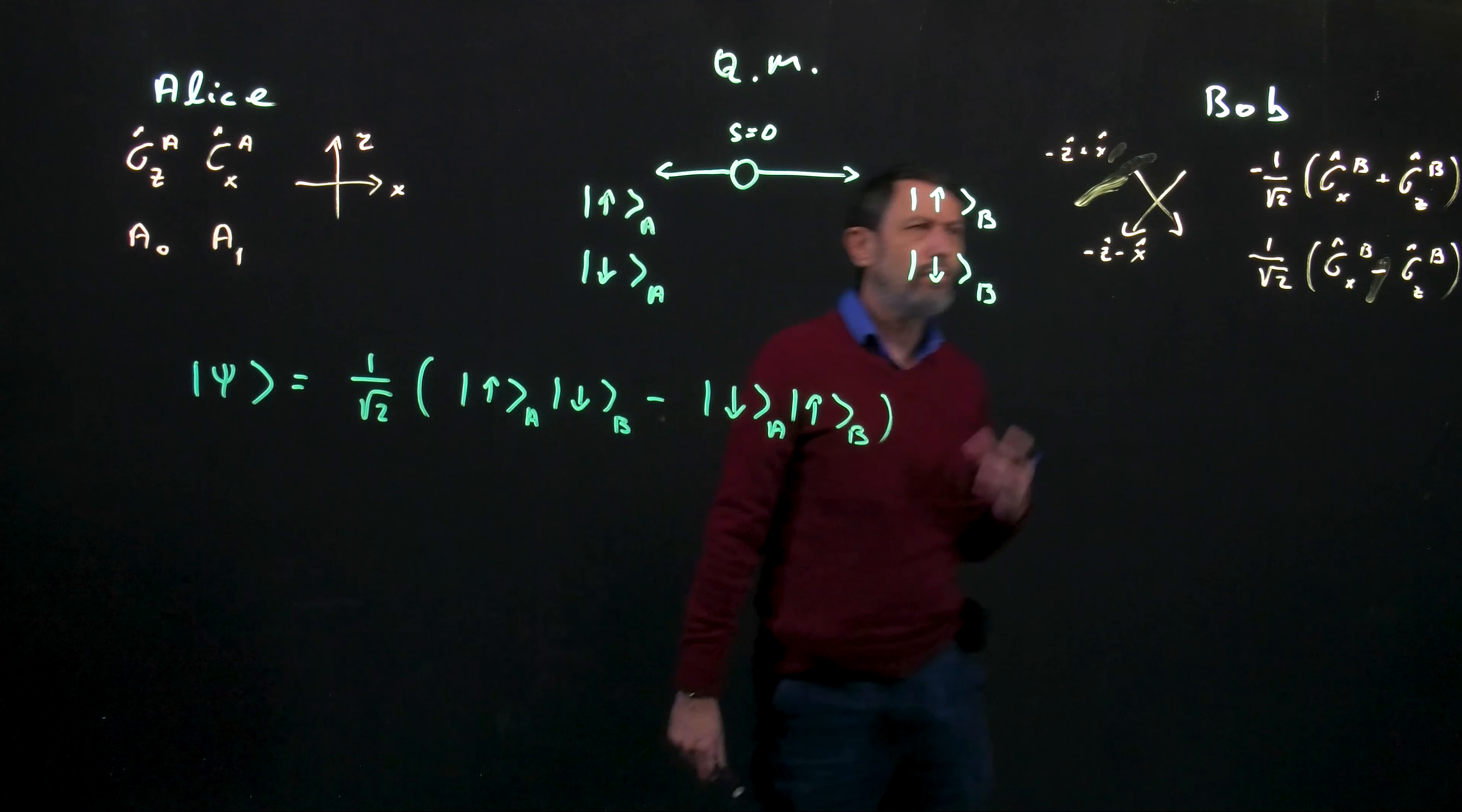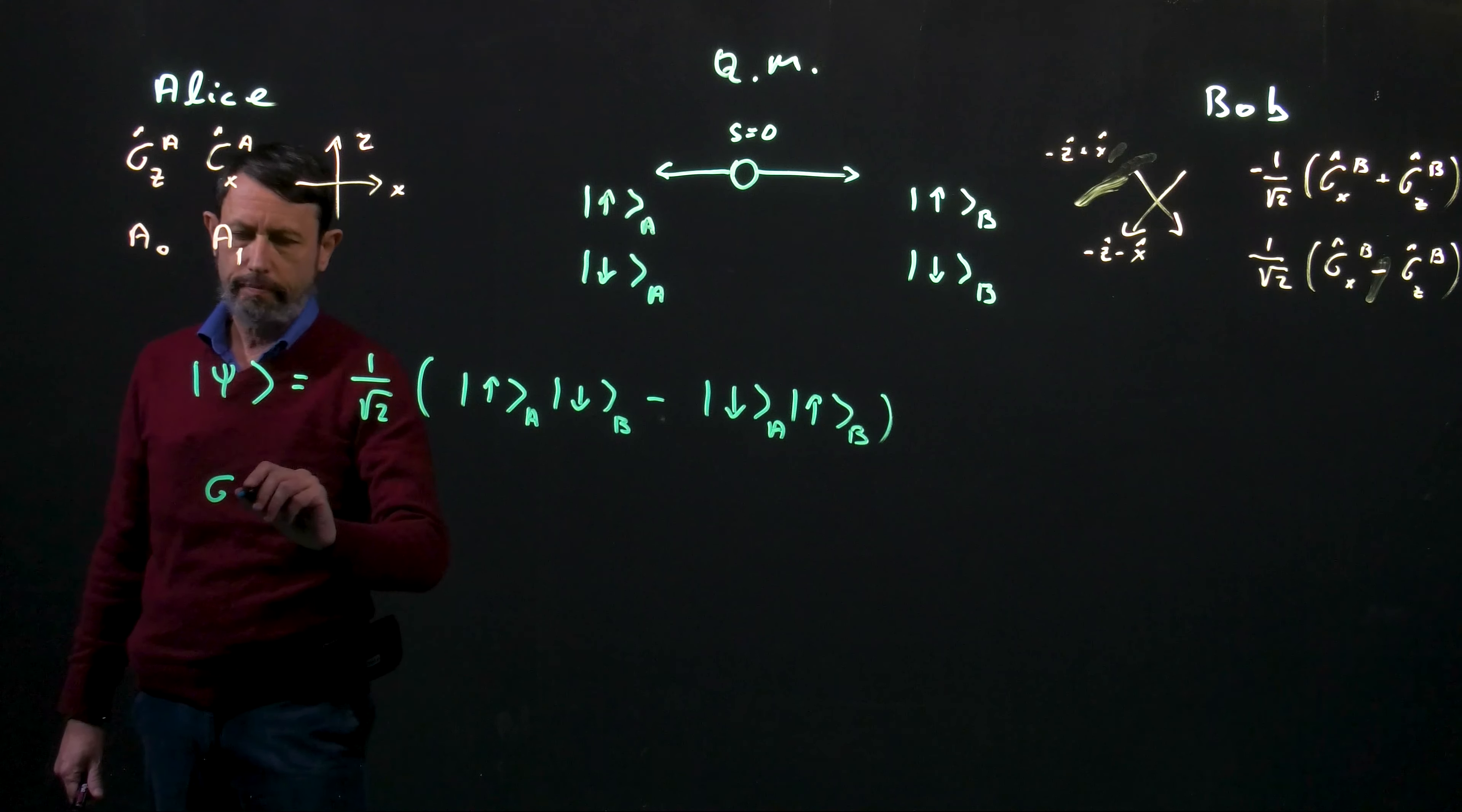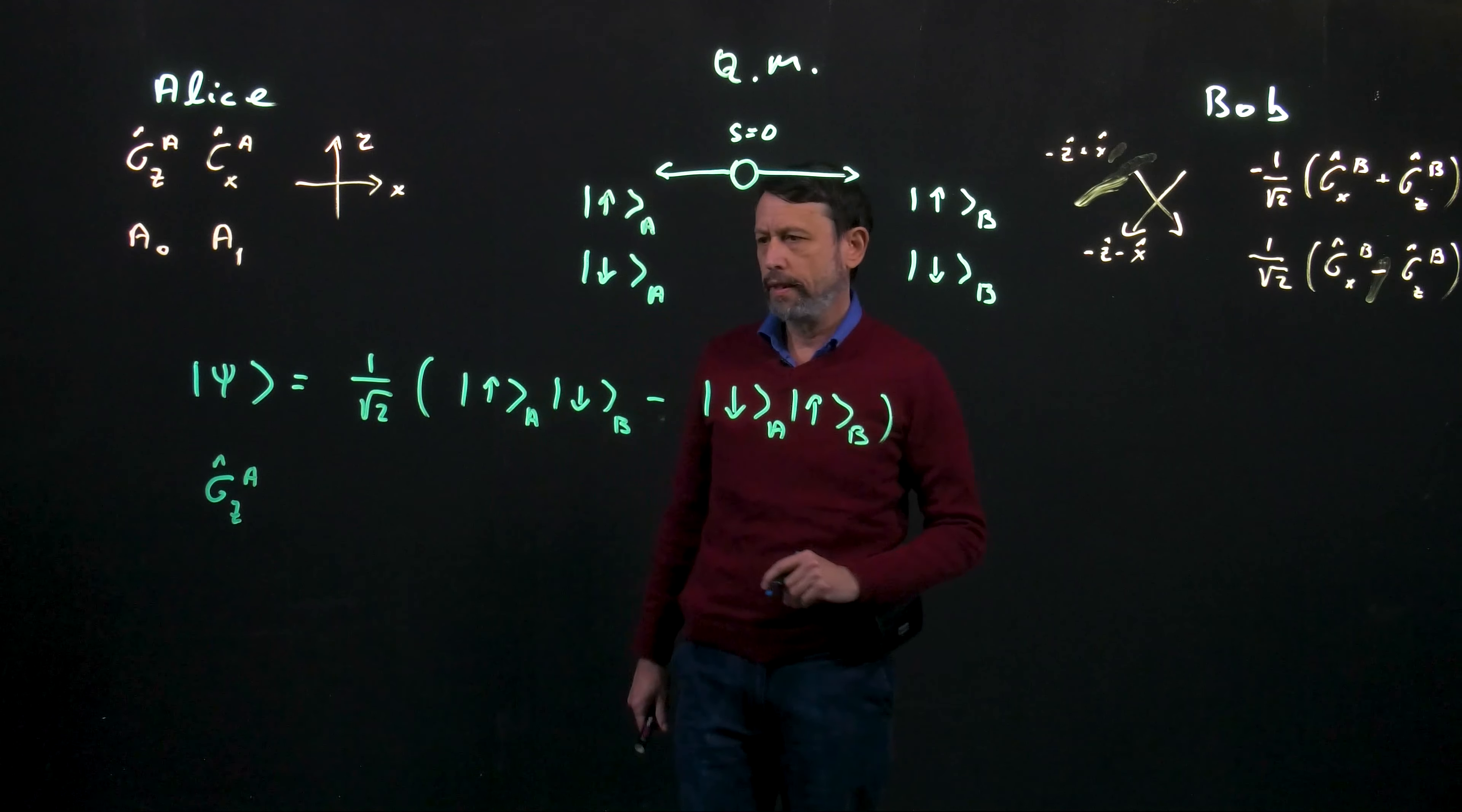Okay, how do I write down the operators in this language? Okay, so I take, for example, Alice's measurement along the z direction.